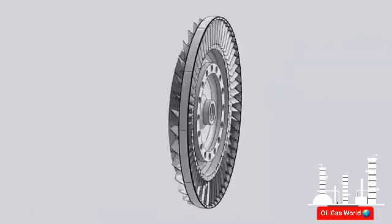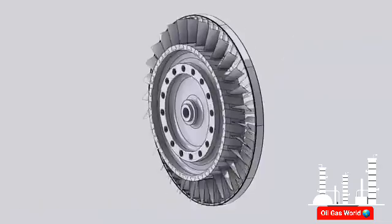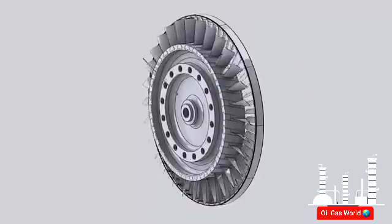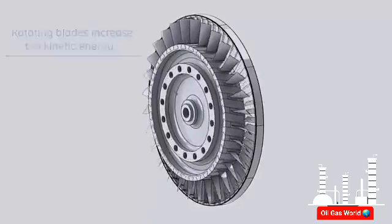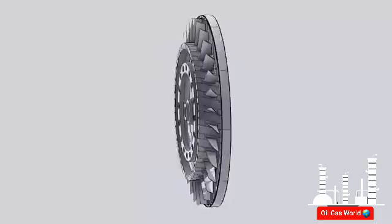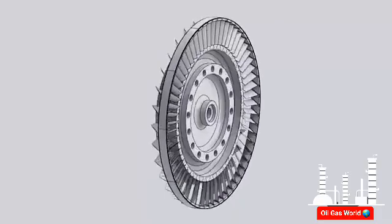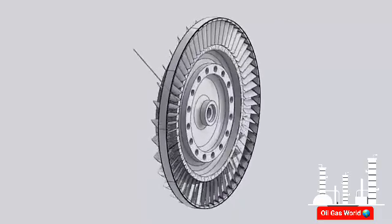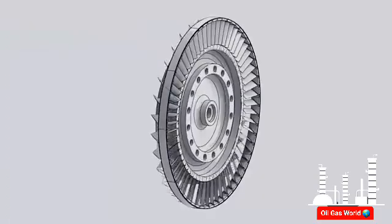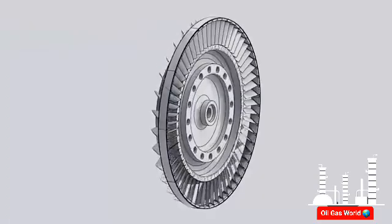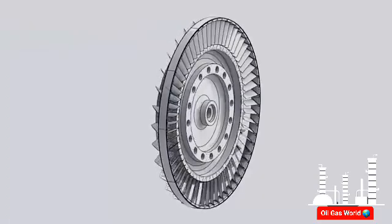Compression is achieved in each stage as the rotating blades increase the relative velocity of the air. The stator stationary blades then convert the gained kinetic energy into a pressure rise and guide air to enter the following stage at the proper angle.